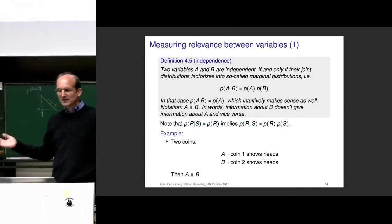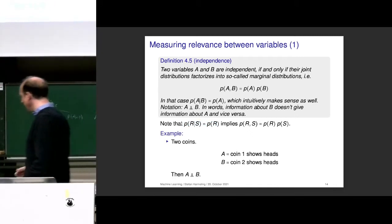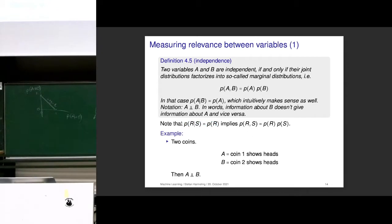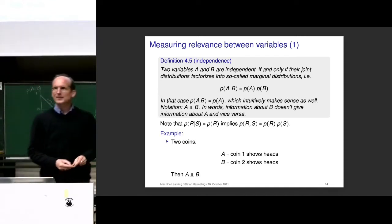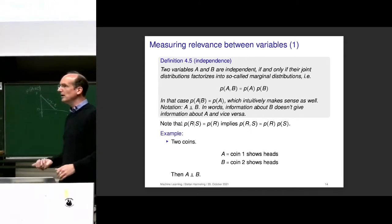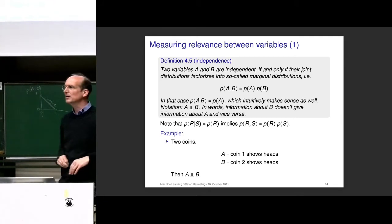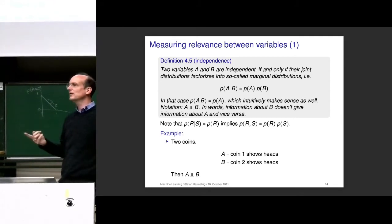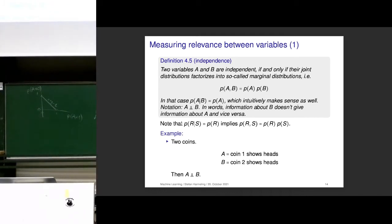Here's a super simple example with two coins. I throw one coin over here, I don't look at it, then I throw the other one and see it's the Brandenburg Gate. I don't know anything about the other one — so those two events are completely independent of each other. I'm telling you in detail because now we get to a slightly different concept: conditional independence.